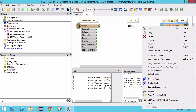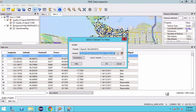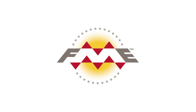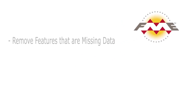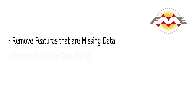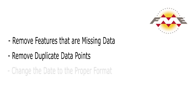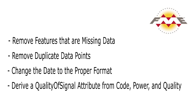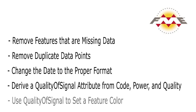Right-click on the output and choose Inspect to open the newly created MapInfo TAB file in the FME Data Inspector. There is some cleanup we will want to do with our source CSV data: remove features that are missing data, remove duplicate data points, change the date to proper format, derive a quality of signal attribute from code, power and quality, and finally use quality of signal to set a feature color.